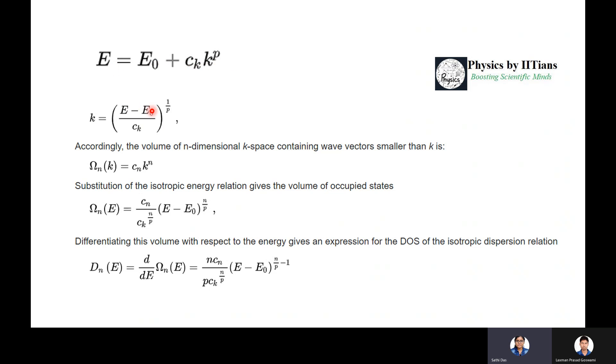For this kind of variation, we can generally write E as E₀ + cₖkᵖ, where k = ((E - E₀)/cₖ)^(1/p). For the n-dimensional k-space containing wave vectors smaller than k, Ωₙ = cₙkⁿ.